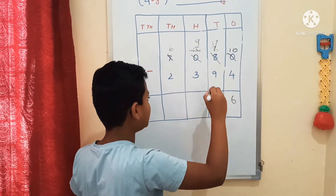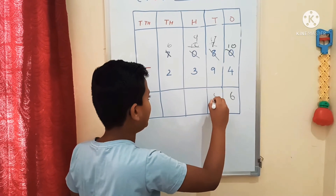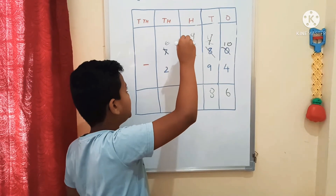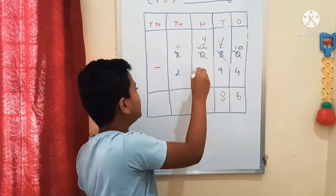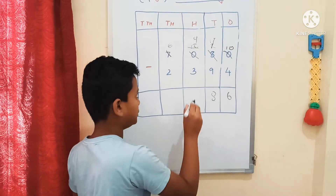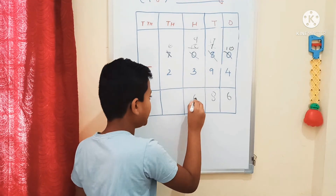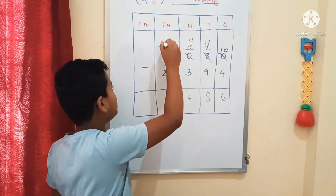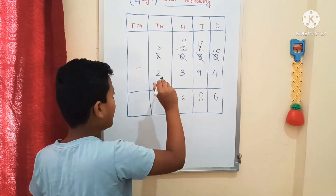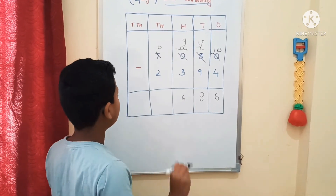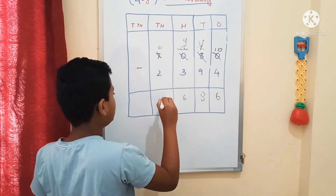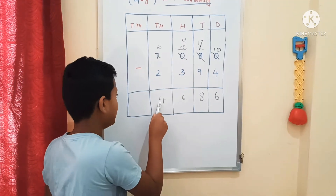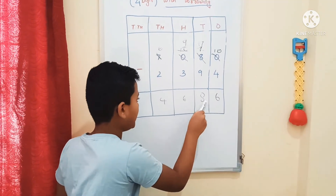17 minus 9 is equal to 8. We go to the 100th place: we can subtract 3 from 9, so 9 minus 3 is equal to 6. We go to the 1000th place: we have 6 there, and 6 minus 2 is equal to 4. So, our answer is 4,686.